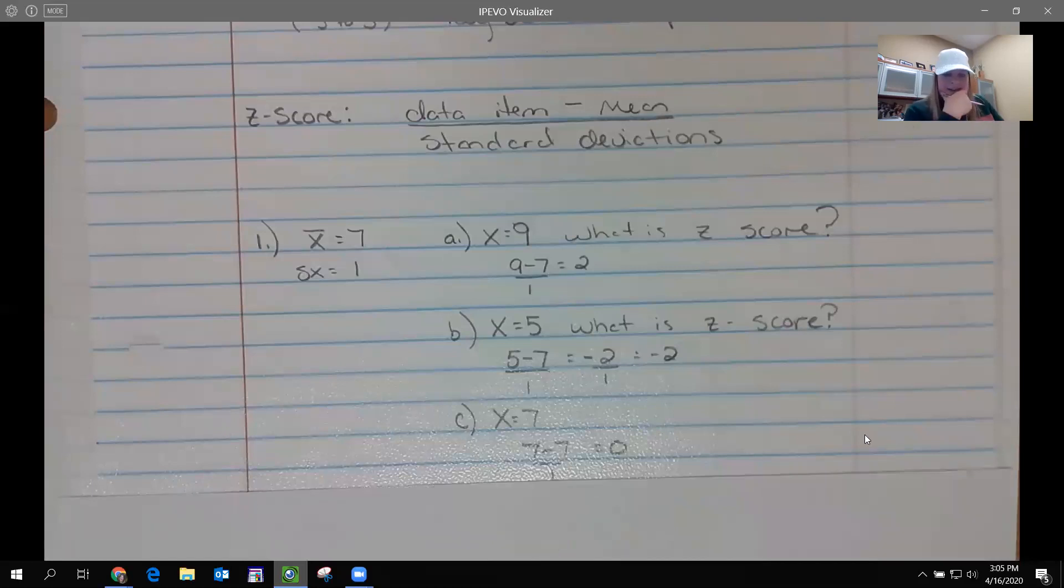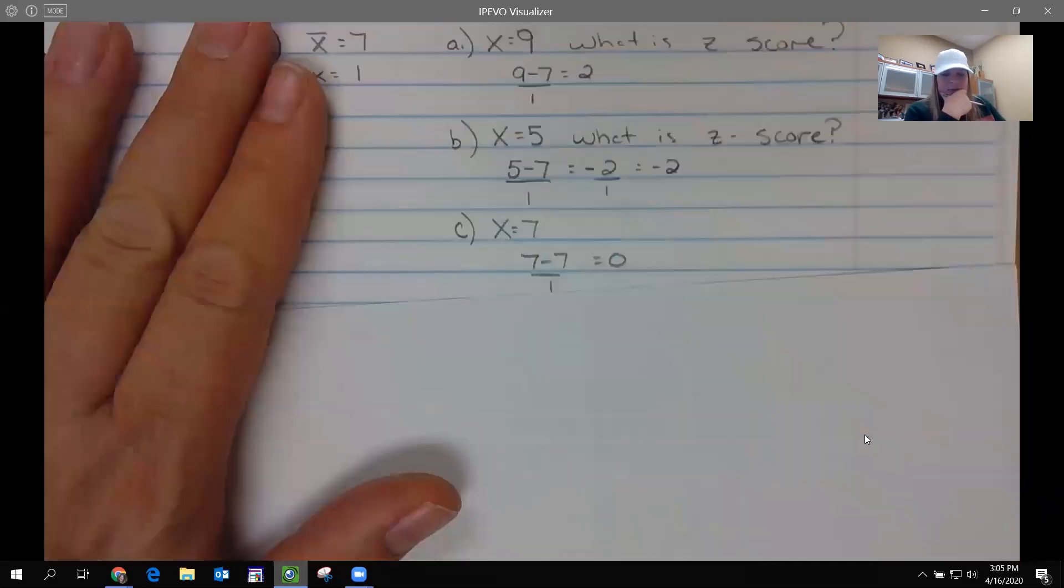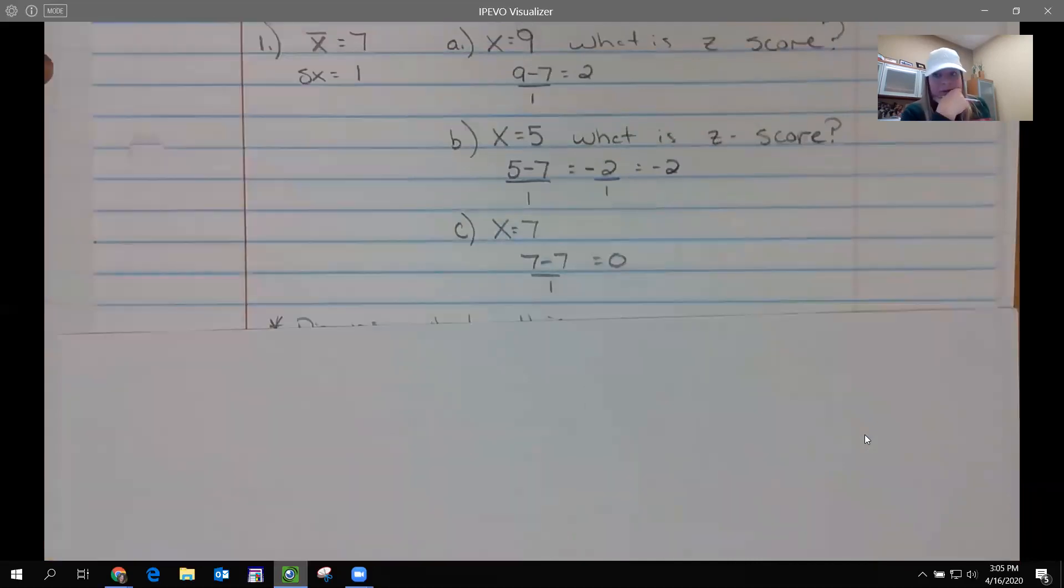So what does that mean? I am two full standard deviations above the mean. 68% of people are one standard deviation away, so this actually means I'm at 95% above everybody else. So super high. So let's look at another value. What if I'm at seven? Seven minus seven is zero. Zero divided by one is still zero. I am right in the middle. If your Z-score is zero, you are equal with everybody else.